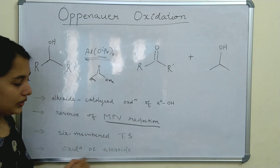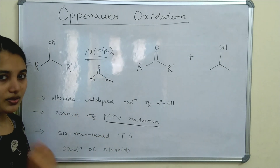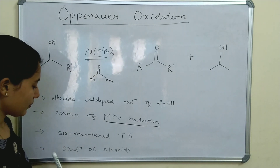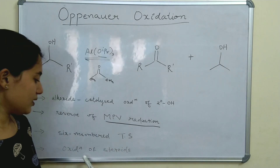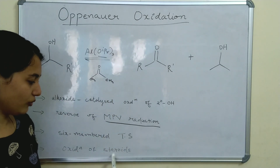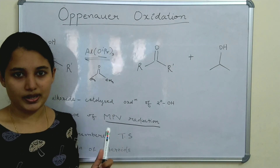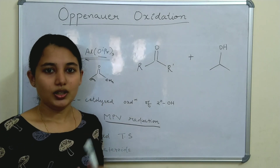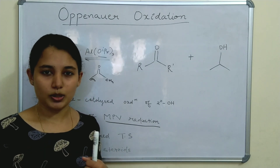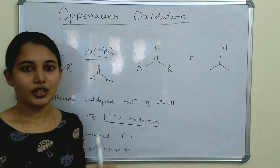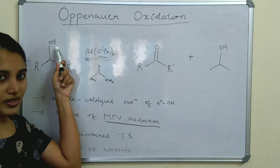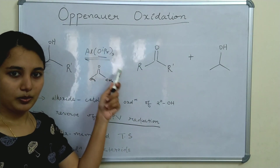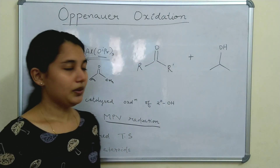This reaction takes place through a six-membered transition state. The mechanism contains a six-membered transition state. Another important thing is Oppenauer oxidation is used for oxidation of steroids. Steroids can be oxidized using this mechanism. During Oppenauer oxidation, other functional groups such as double bonds, amides, and esters are not affected. Only the OH group is oxidized to the corresponding carbonyl compound. Secondary OH is converted to a ketone and primary OH is converted to an aldehyde.